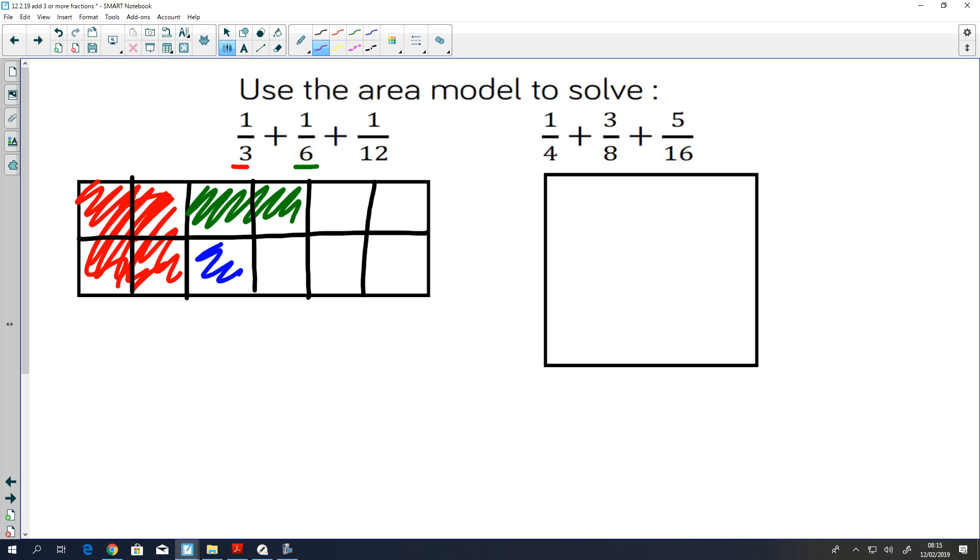Now I have to count how many bits I've got out of 12: one, two, three, four, five, six, seven. And that's it. You can try the one on the right.